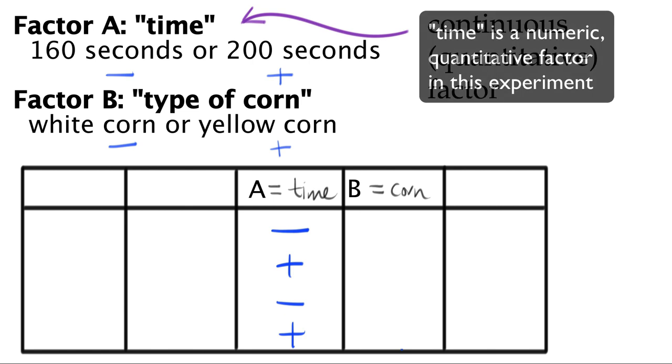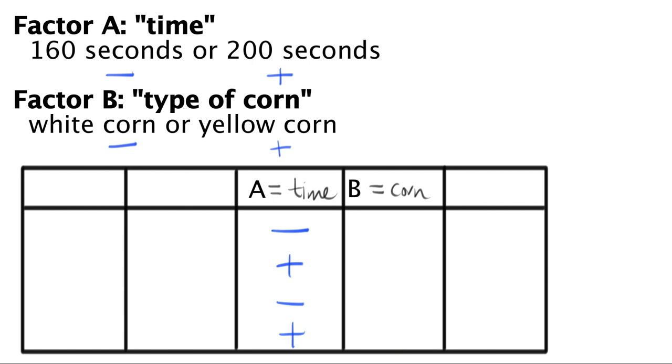Now let's consider factor B. This is a categorical variable. There isn't a natural assignment for the minus or plus signs, so in this case we allocate them arbitrarily. For example, let's put white corn as minus and yellow corn as plus. We could have flipped this allocation around, but as you will prove to yourself in a quiz during this module, you will still get the same results. So complete this table now by adding column B, and vary that column one step slower than the prior column for column A. Minus, minus, plus, and then plus.